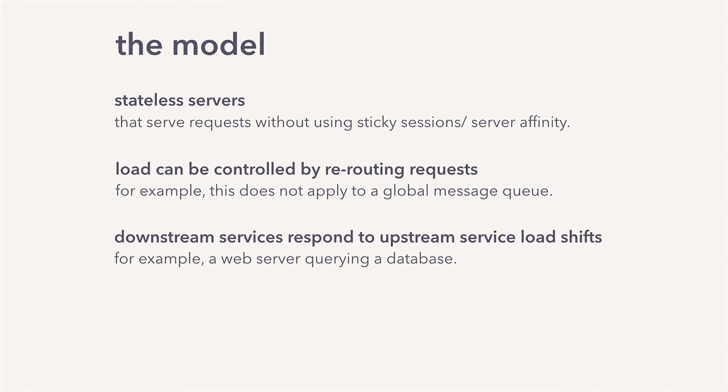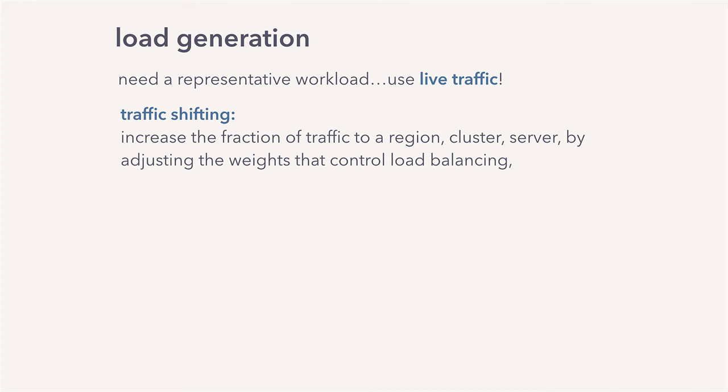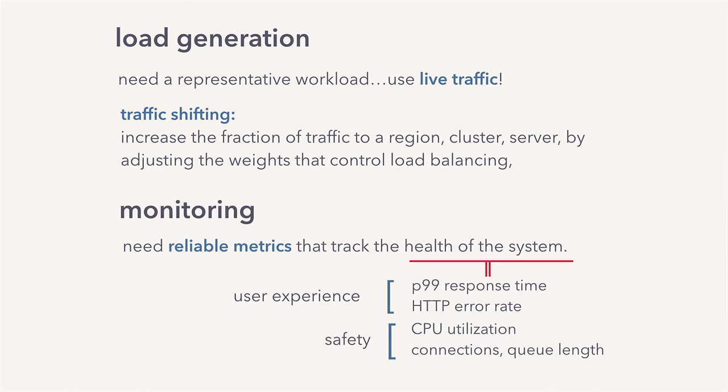There are two pieces to Kraken. The first is the load generation aspect. The best representation of live traffic is live traffic, so they use live traffic by employing traffic shifting — a familiar technique where you adjust the weights of your load balancers to reroute traffic to the system under test. The second piece is monitoring: you need reliable metrics to track the health of the system so you know when it's approaching its limits and when to back off — you don't want to cause a production outage while testing. Kraken employs these two pieces in a feedback loop.